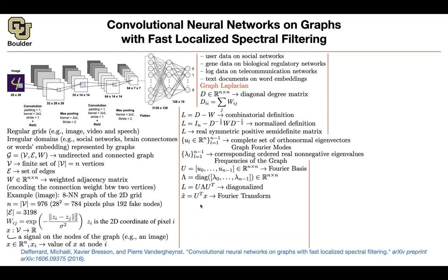So what is the Fourier transform of a signal here? You take your X — take an image — and if you multiply it by U transpose, that takes you from the real domain into the Fourier domain. So X-hat is now in your Fourier domain. You can go backward by using U. U transpose takes you from real to Fourier, and U takes you from Fourier to real. And we know that convolutions in the real domain correspond to simple multiplications in the Fourier domain.